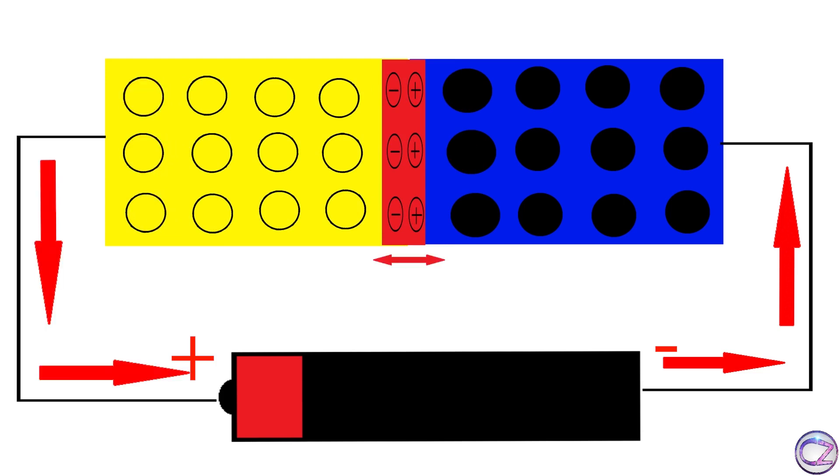Look at the depletion layer. It's very narrow. This condition is known as forward bias of the diode. So we can say a diode works like a one-way valve for electron flow. That's why diodes are known as semiconductor rectifiers.